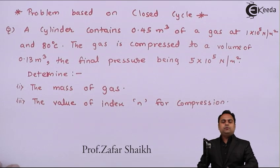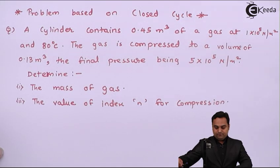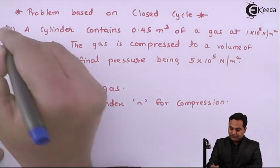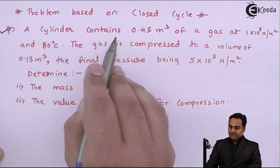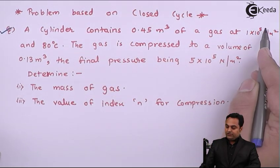Hello friends, here we have a problem based on closed cycle. I'll read the question and write the data. A cylinder contains 0.45 meter cube of gas at 1×10^5 Newton per meter square